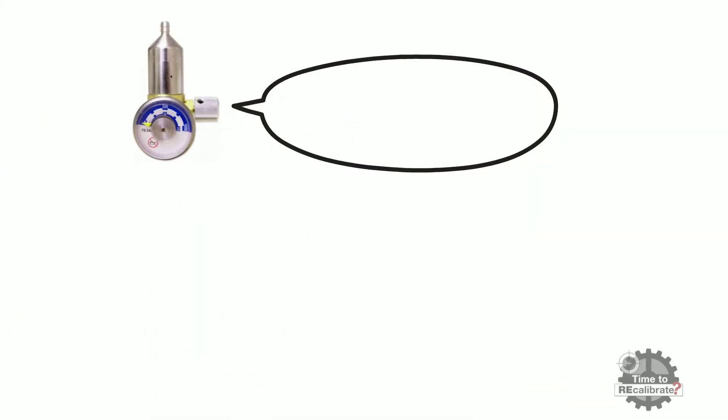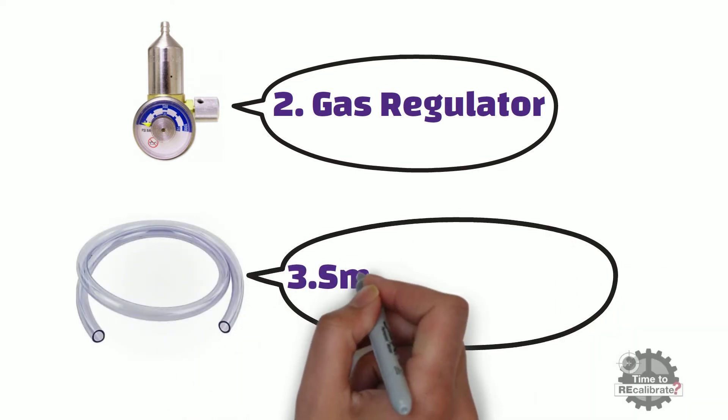Secondly, we need a gas regulator. Lastly, we also need a small Tygon tube.